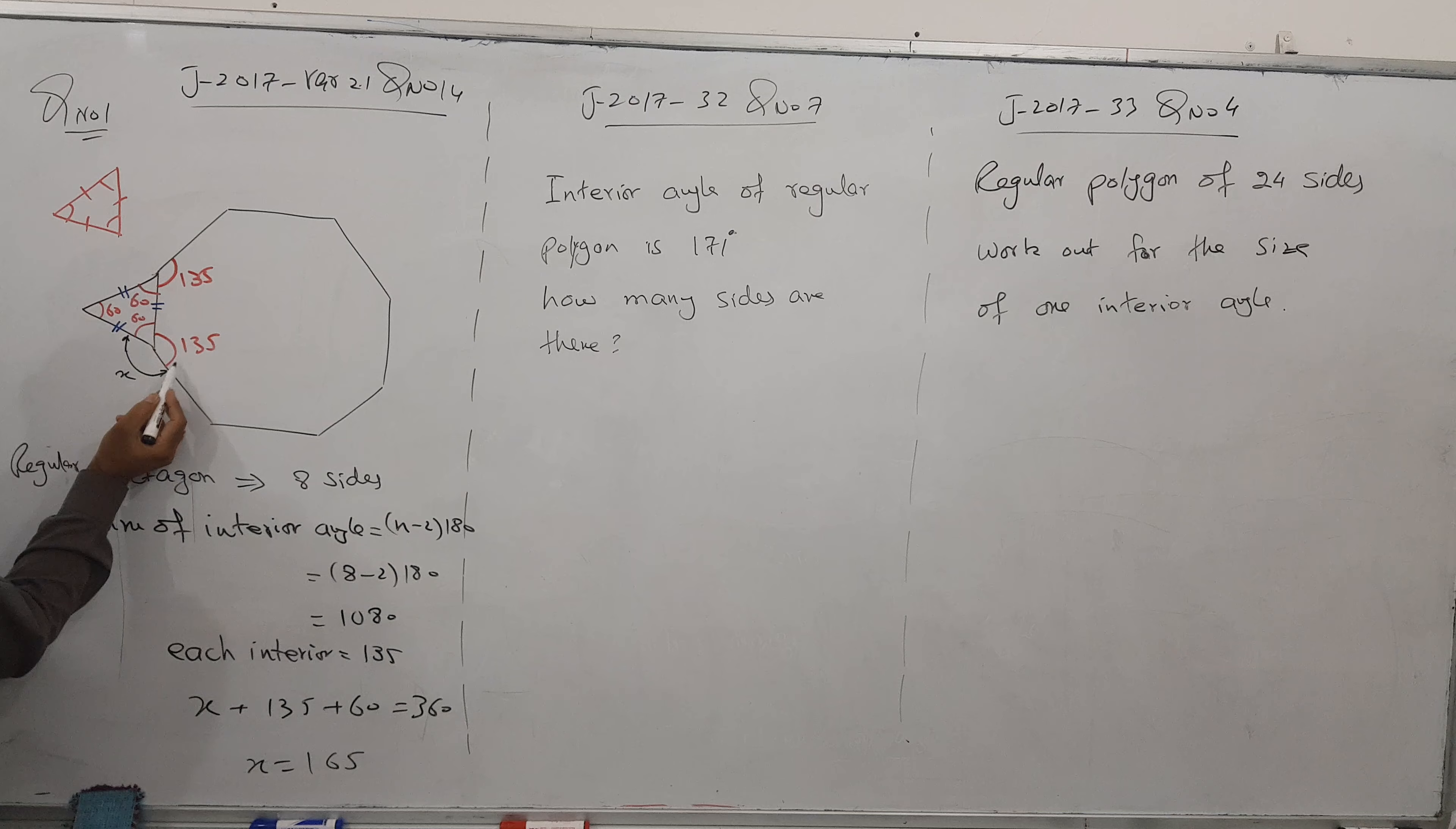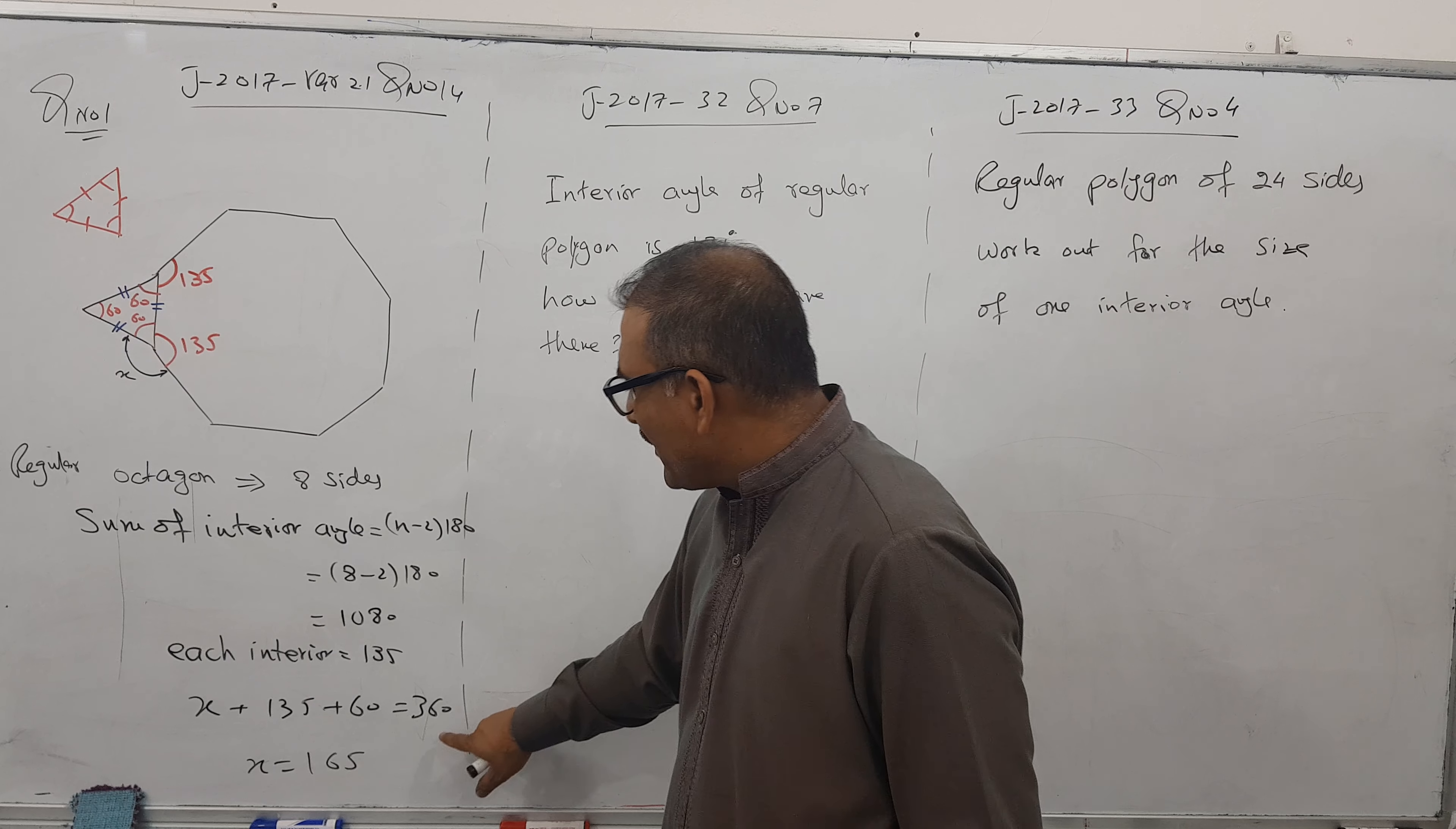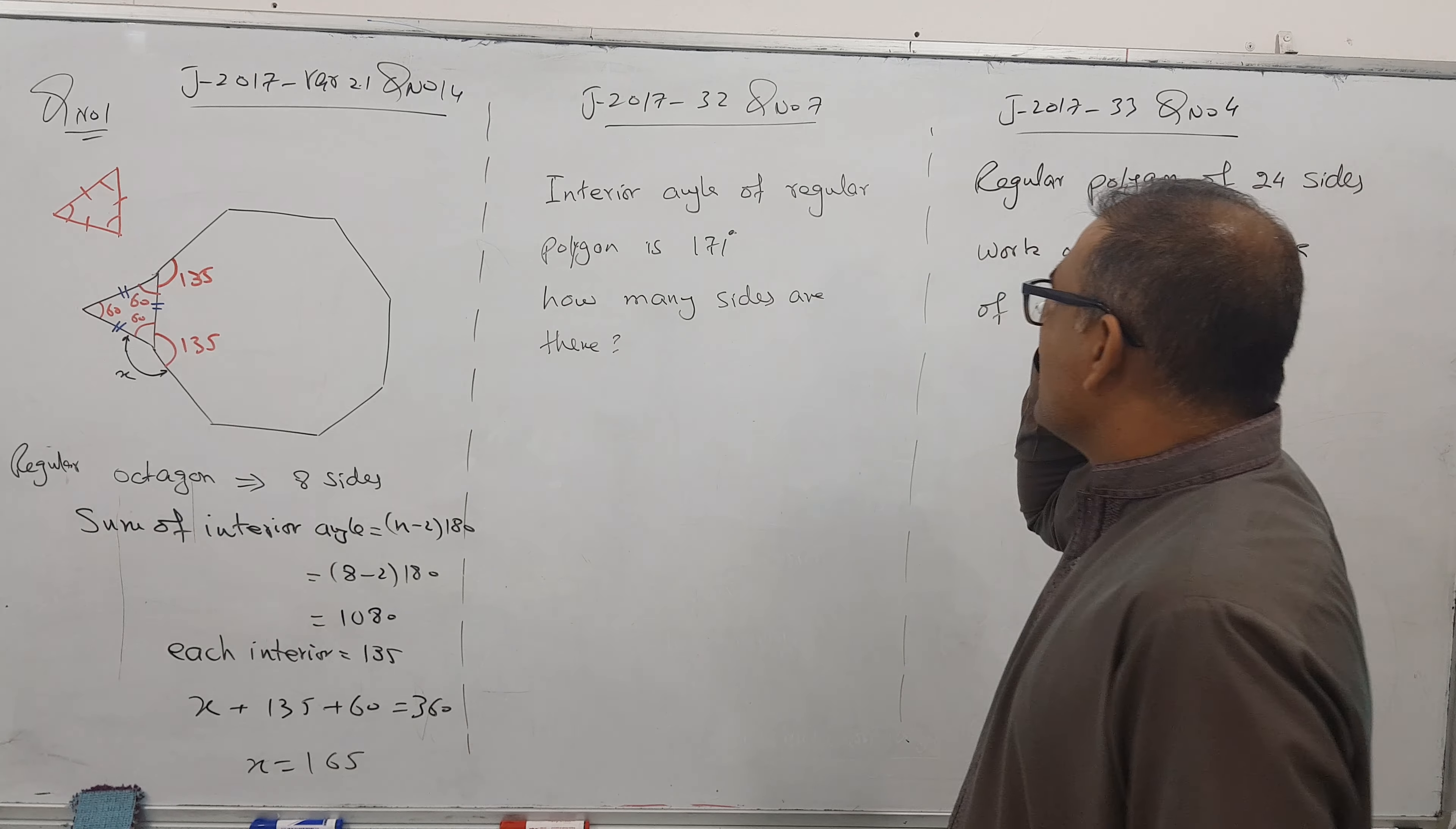This angle is 60, this angle is 135, and this angle is x. If you add them all, you get 360 degrees. So x plus 135 plus 60 equals 360, and ultimately I got answer 165.